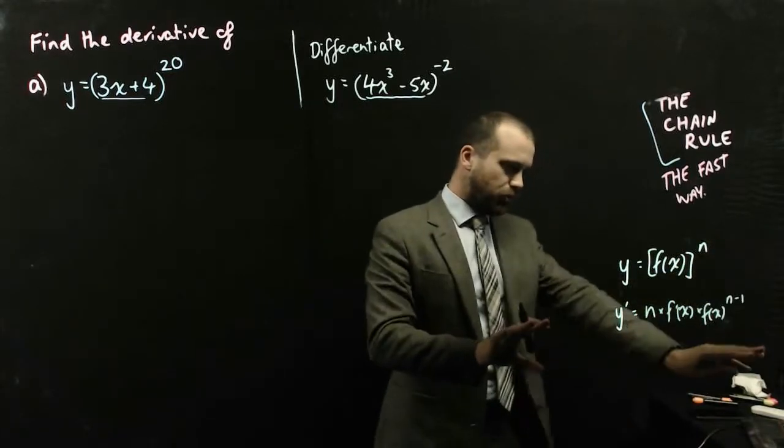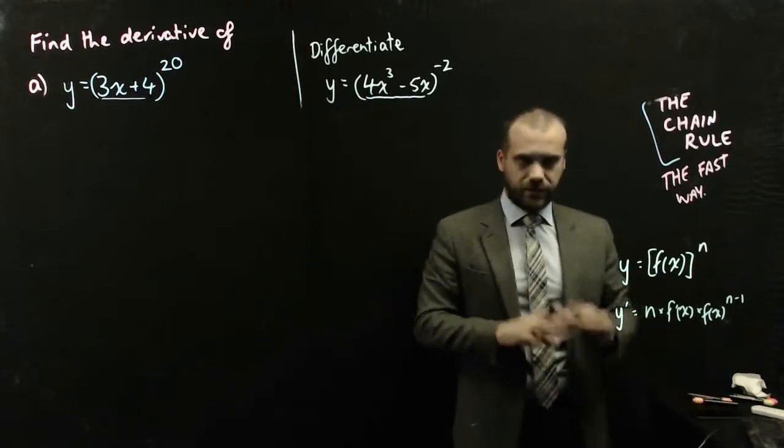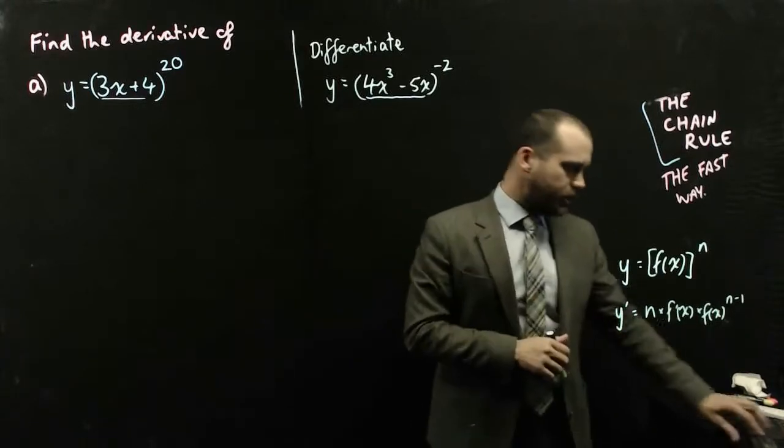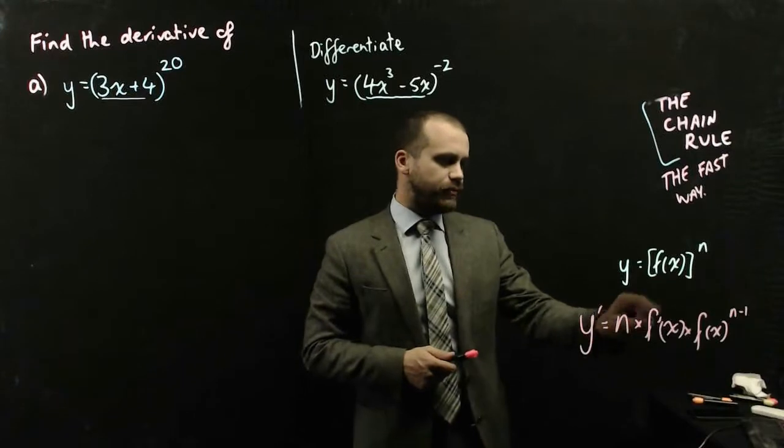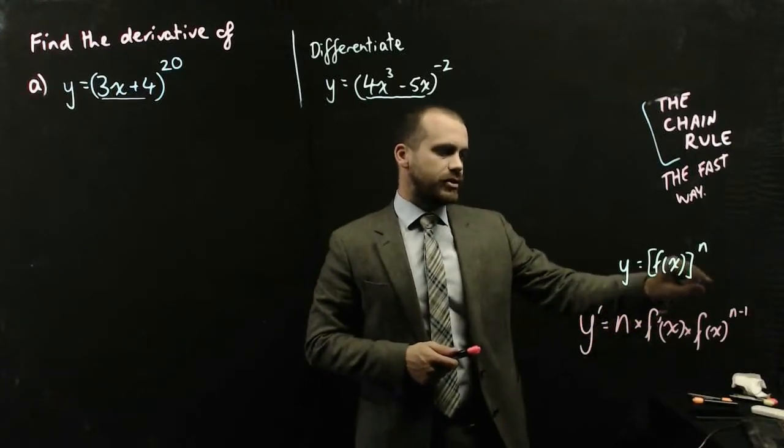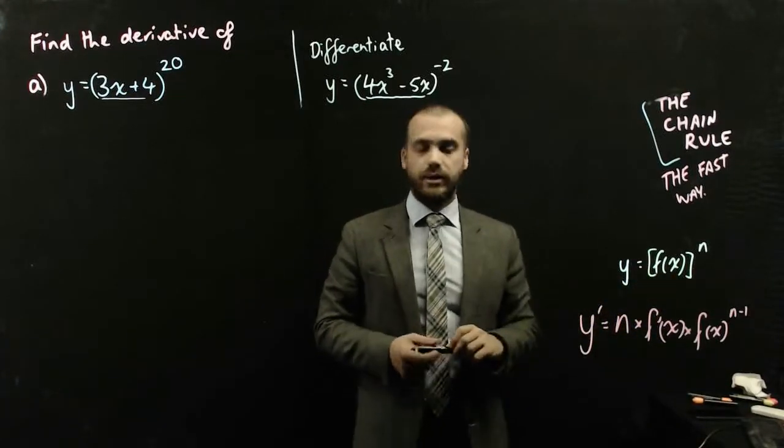It looks like a big long formula there, but it's pretty straightforward. I might just write it again. y dash equals n times f dash of x times f of x to the power of n minus 1.